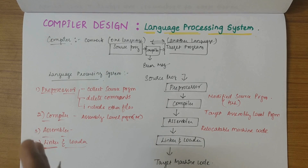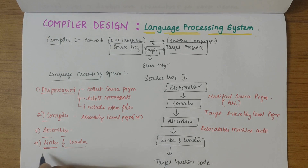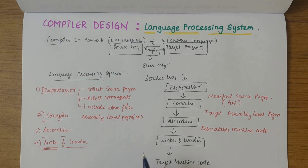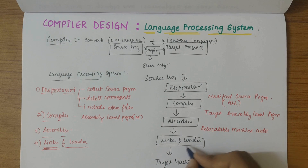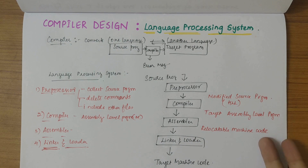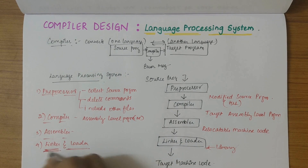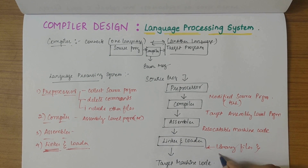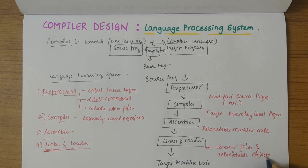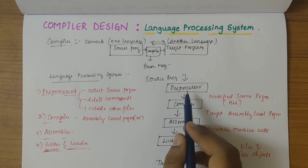Then we have the linker and loader. The linker collects separately compiled or assembled object files and combines them into a file that is directly executable. The loader then loads all executable object files into memory for execution. The linker and loader take relocatable machine code as input along with library files to produce the target machine code.